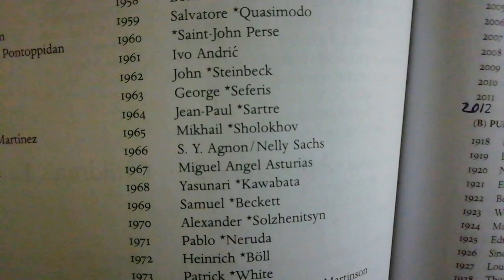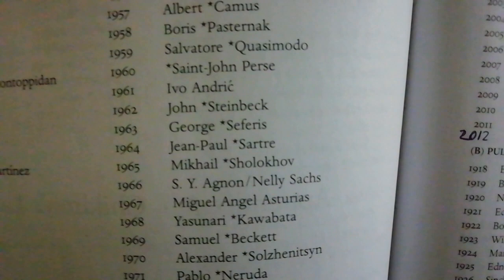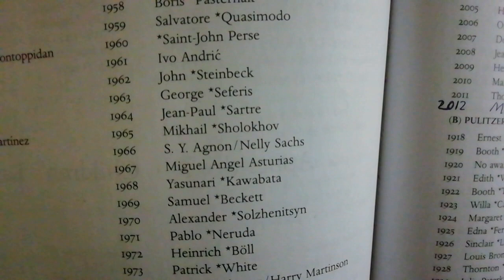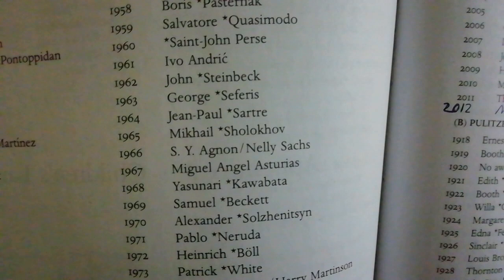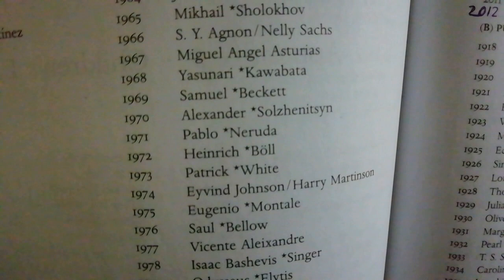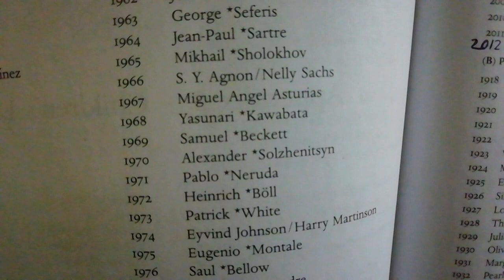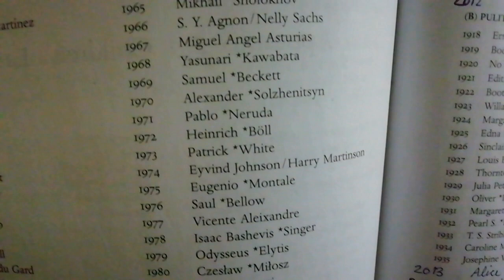Boris Pasternak — the person who never came to take the Nobel Prize, very famous Russian writer. John Steinbeck — very recognized American writer, with many movies made from his works. Jean-Paul Sartre — very important writer, very interesting works. 1964 Nobel laureate, and then 1969 is an important year.